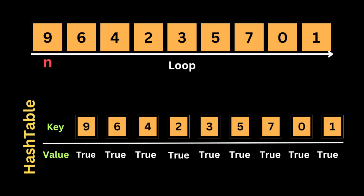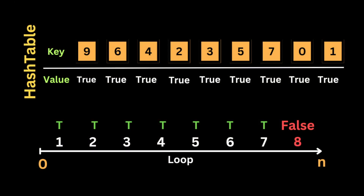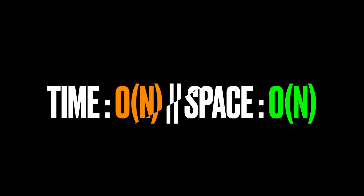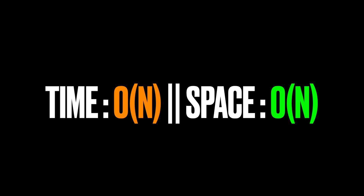The second way to solve this problem reduces the time complexity to linear time instead of O(n log n), by using a hash table. We set a hash map, loop over the array, and each time set the current number as a key with the value true. Then we loop again from 0 to n to check if the current number is not true in the hash table — the key with a false value is the number we're looking for. The time complexity is O(n) but the space complexity is also O(n) because we use a hash table that grows with the input.